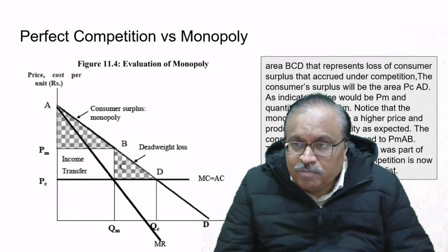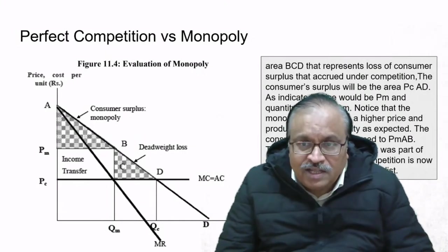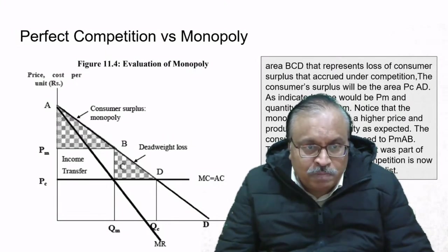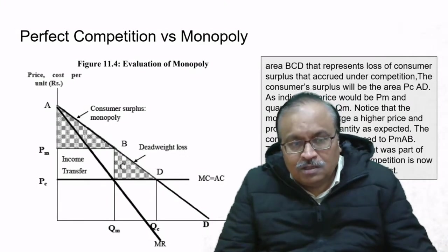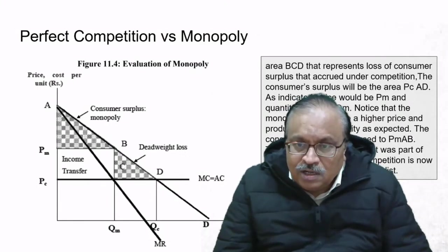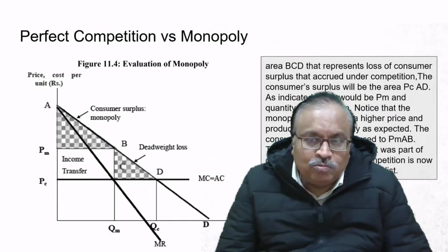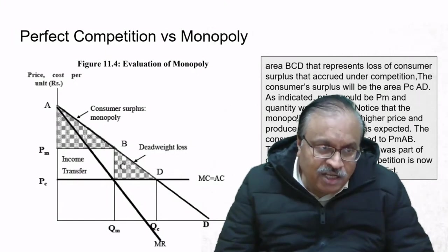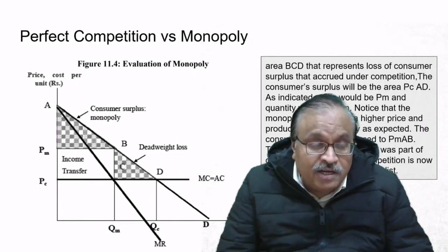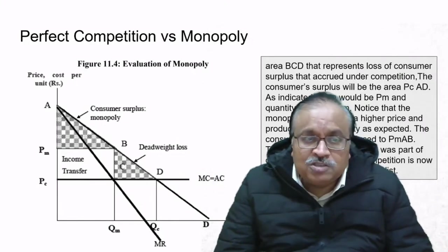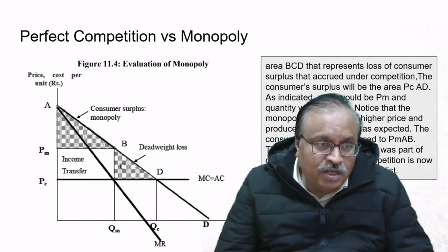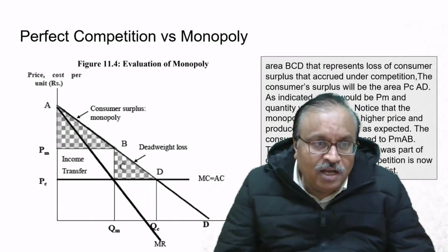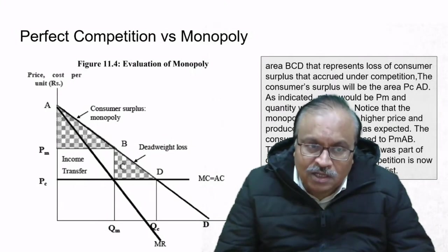As indicated, the price will be Pm and quantity would be Qm. Notice that the monopolist will charge a higher price and produce a lower quantity. The consumer surplus is reduced to PmAB, which is just above the PC line. The rectangle PC-Pm-BC, which was part of consumer surplus under competition, is now economic profit for the monopolist. So part of the consumer surplus has transferred to the firm's account.